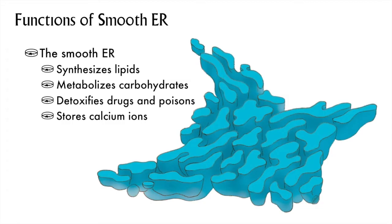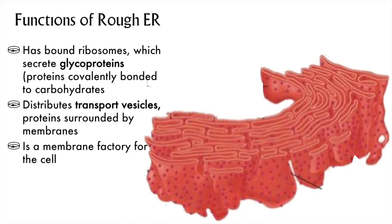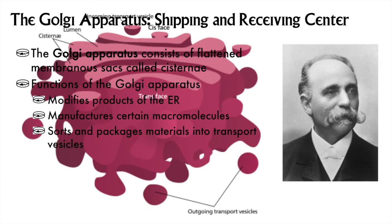The smooth ER has the following functions: it makes lipids and metabolizes carbohydrates, it detoxifies things like drugs and poisons, and it can store calcium ions. The rough ER produces proteins with the ribosomes that are attached, as well as glycoproteins, which are part carbohydrate and part protein. The rough ER also takes the lipids synthesized in the smooth ER and makes them into membranes to become other parts of the endomembrane system, including transport vesicles.